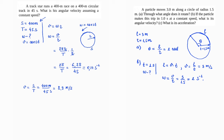Part C asks for the particle's acceleration. The problem asks for the centripetal acceleration, not angular acceleration. First, since omega is constant, the angular acceleration alpha equals ΔΩ/Δt equals zero.